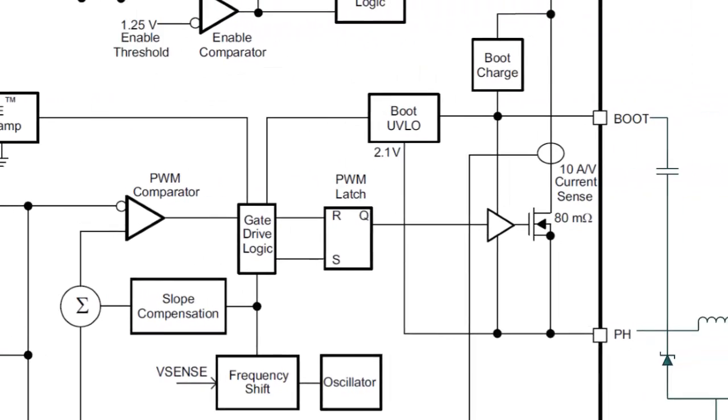A capacitor placed on the boot pin is charged by the internal boot charging circuit. This ensures that the internal FET will only start switching when the voltage across the boot capacitor has reached 2.1 volts.